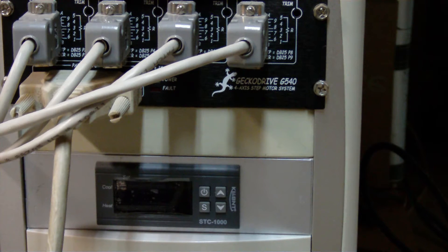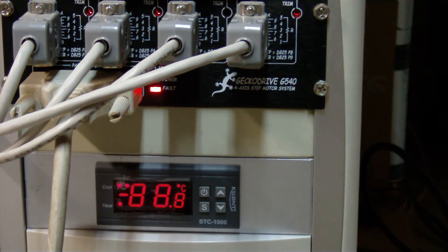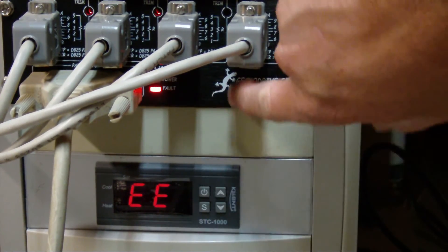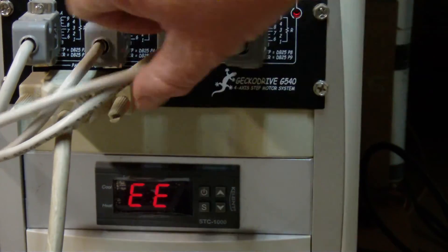So I'm going to turn it on to start with and I've removed the sensor. This simulates if the plug falls out. It's gone into an error state and you can see here that the fault light is on on the Gecko.